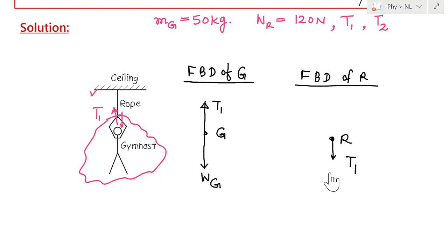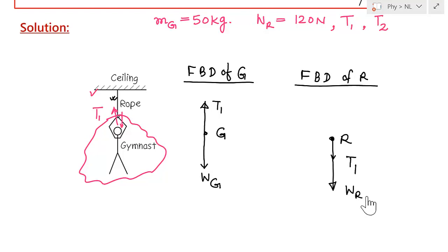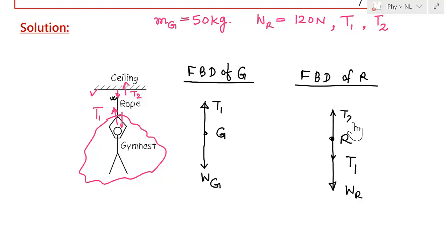What other forces act on the rope? This is not a massless rope, so the weight of the rope also acts in the downward direction — let us call this WR, the weight of the rope. Additionally, the rope pulls the ceiling downward, which means the ceiling pulls the rope upward. The magnitude of this force at the top point is T2, acting in the upward direction.